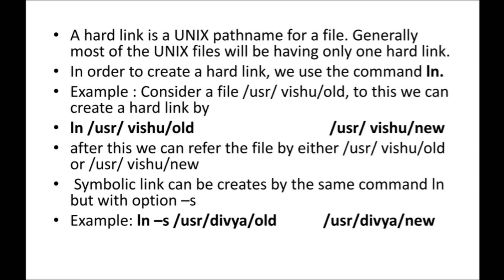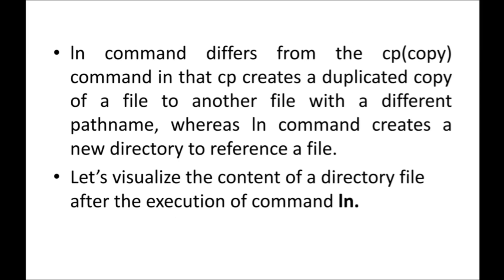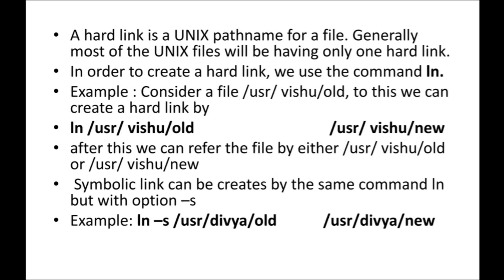Now what is the difference between a hard link and a symbolic link? The 'ln -s' command differs from the 'cp' (copy) command. 'cp' creates a duplicated copy of a file to another file with a different path name — the same contents of a file will be copied to another file. Whereas the 'ln' command creates a new directory entry to reference a file. With hard link, the same file can be found in one, two, or three locations — the contents remain the same, no need to copy the contents to another file.